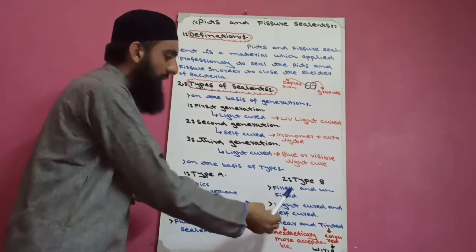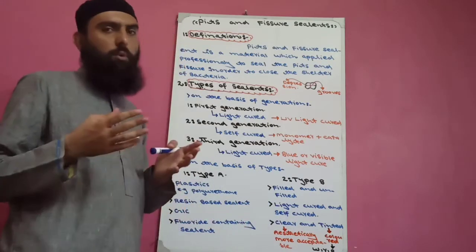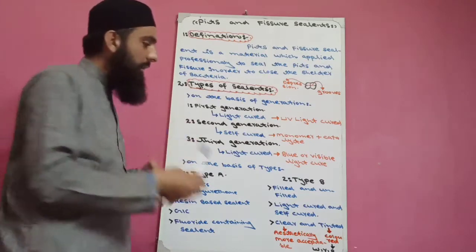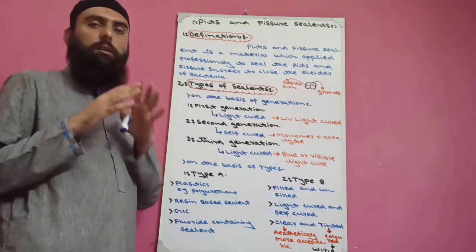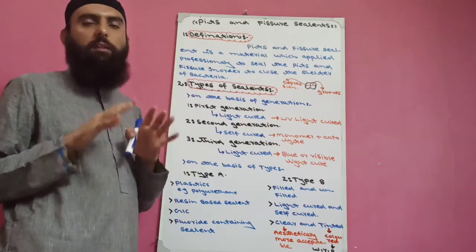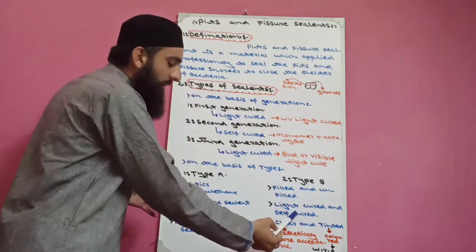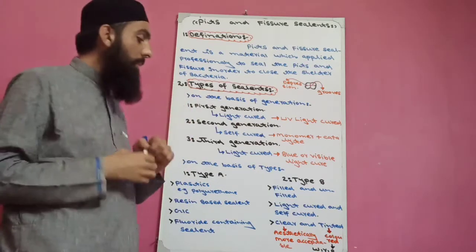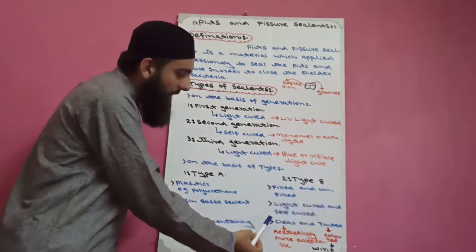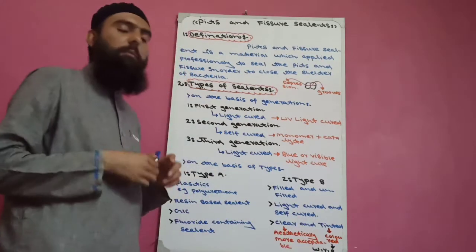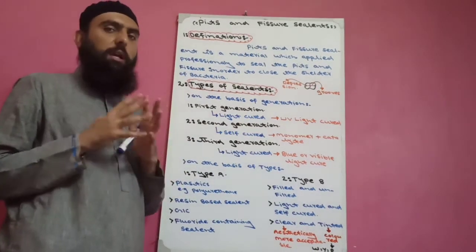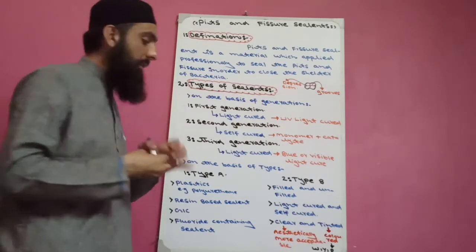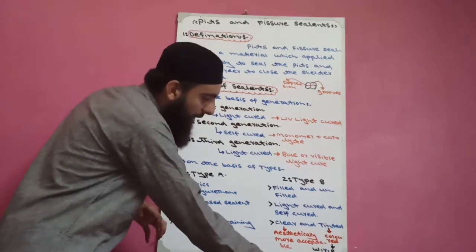The second category in Type B is light-cure and self-cure. Light-cure is cured by blue light, and self-cure consists of catalyst and monomer — due to polymerization of the monomer, setting takes place. The third category in Type B is clear and tinted pits and fissure sealants. One is clear and the other is tinted — tinted means colored, like white, yellow, or pink.